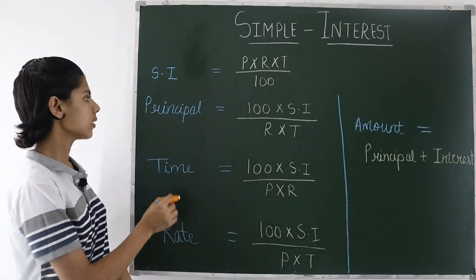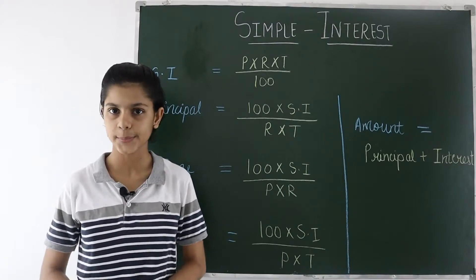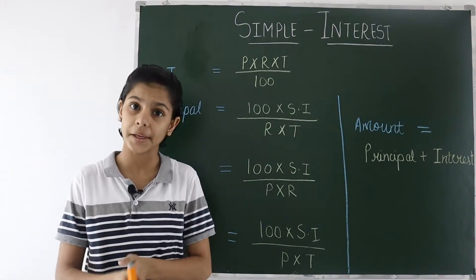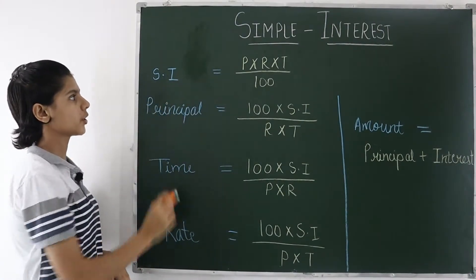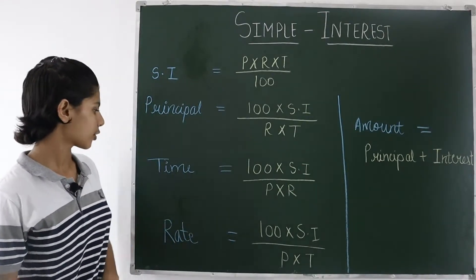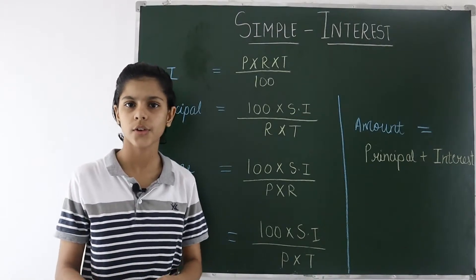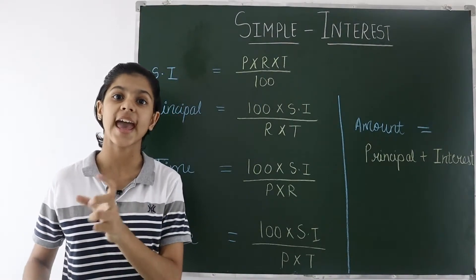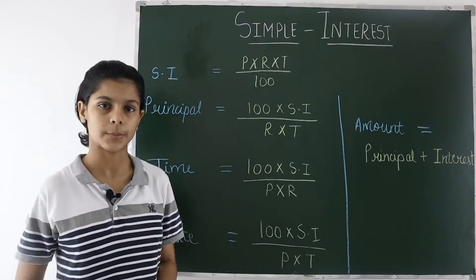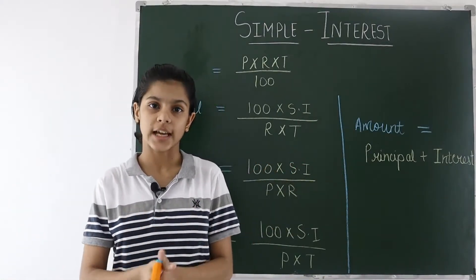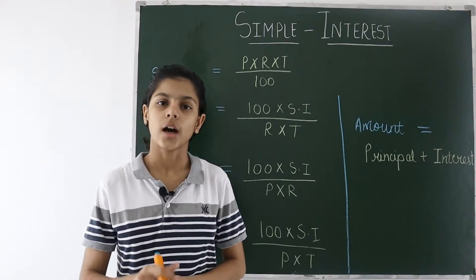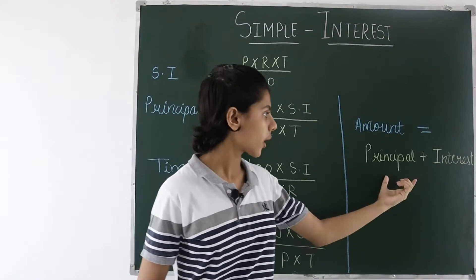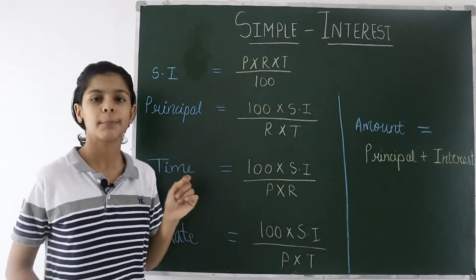The money which I have borrowed — like 10,000 — is known as the Principal, or sum. Whatever you have borrowed or invested is known as the principal. The extra money you will pay after the time has finished is known as Simple Interest, abbreviated as SI. Time is for how long you have borrowed — one year, two years, three years, etc. Rate is how much increase there will be per annum, meaning annually. Amount is the total you will pay at the end: principal plus interest together.